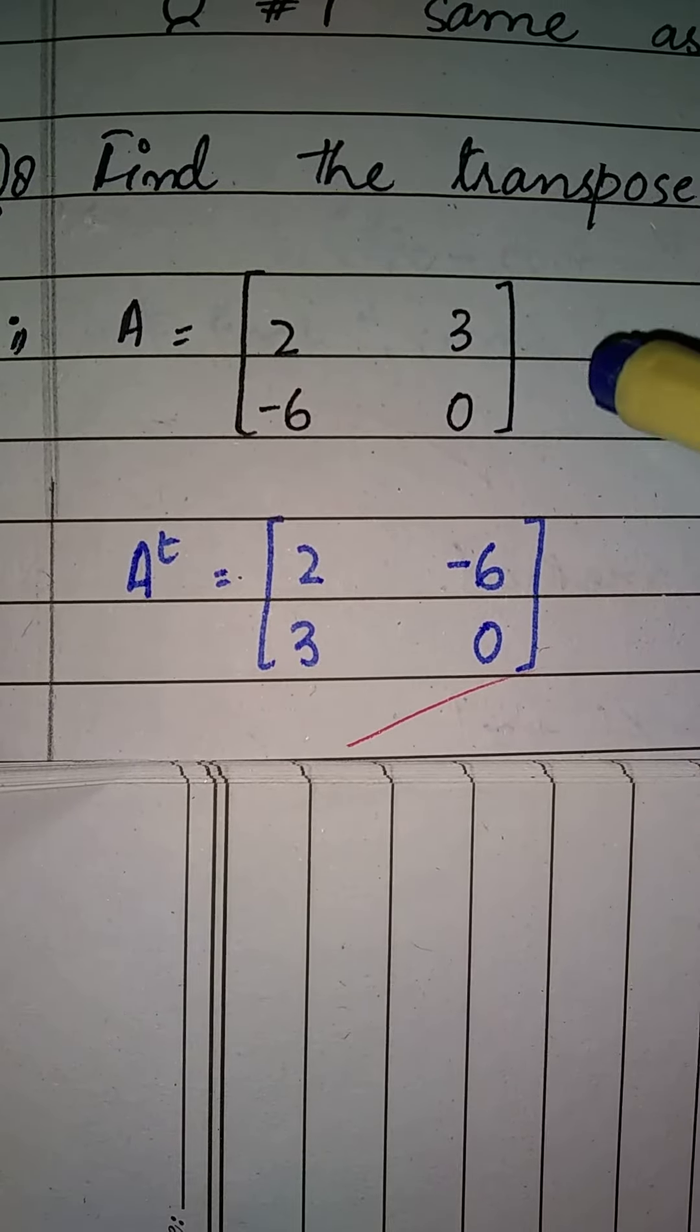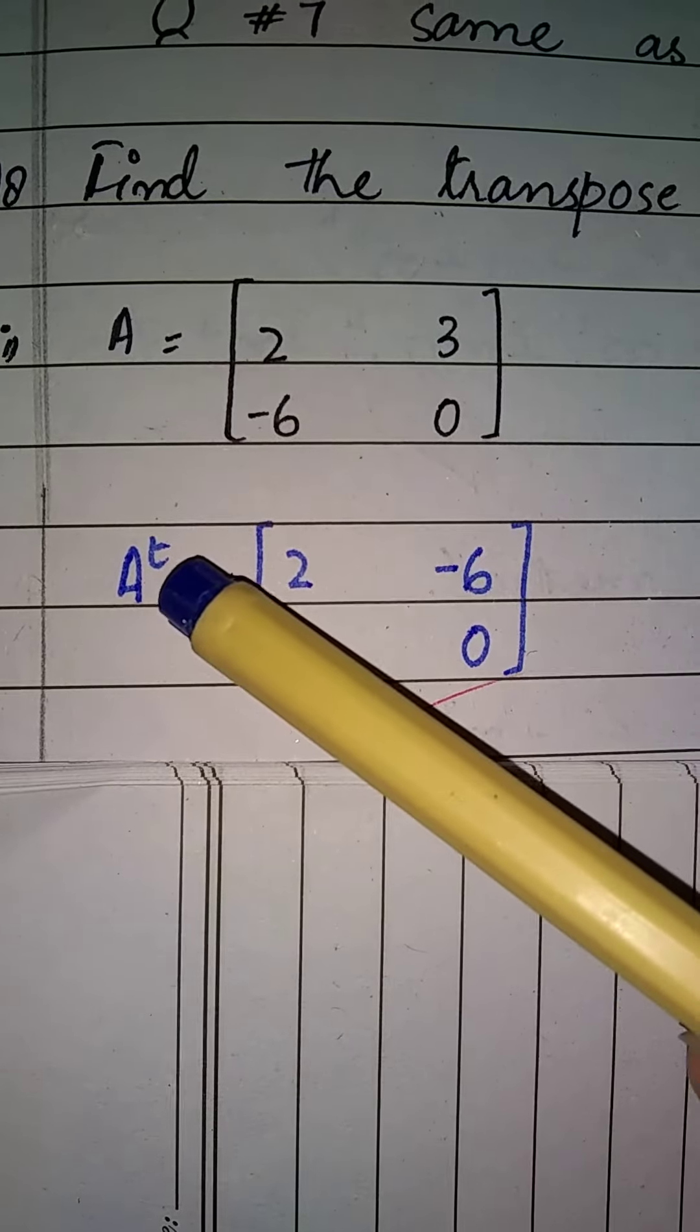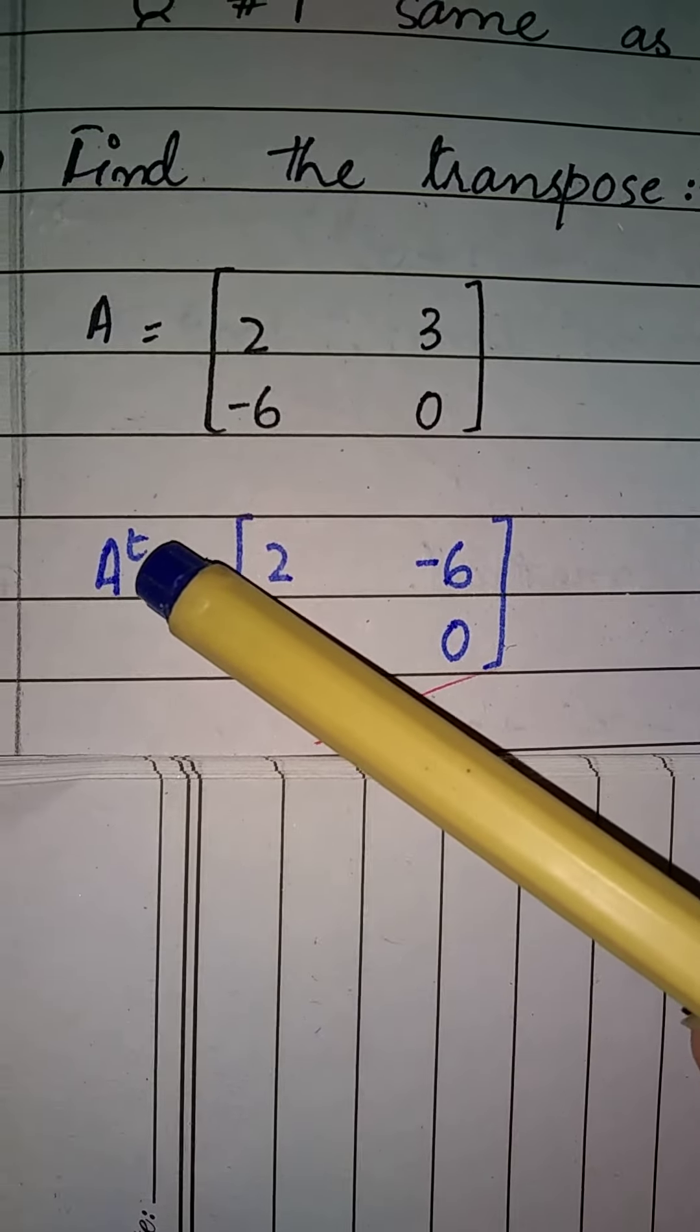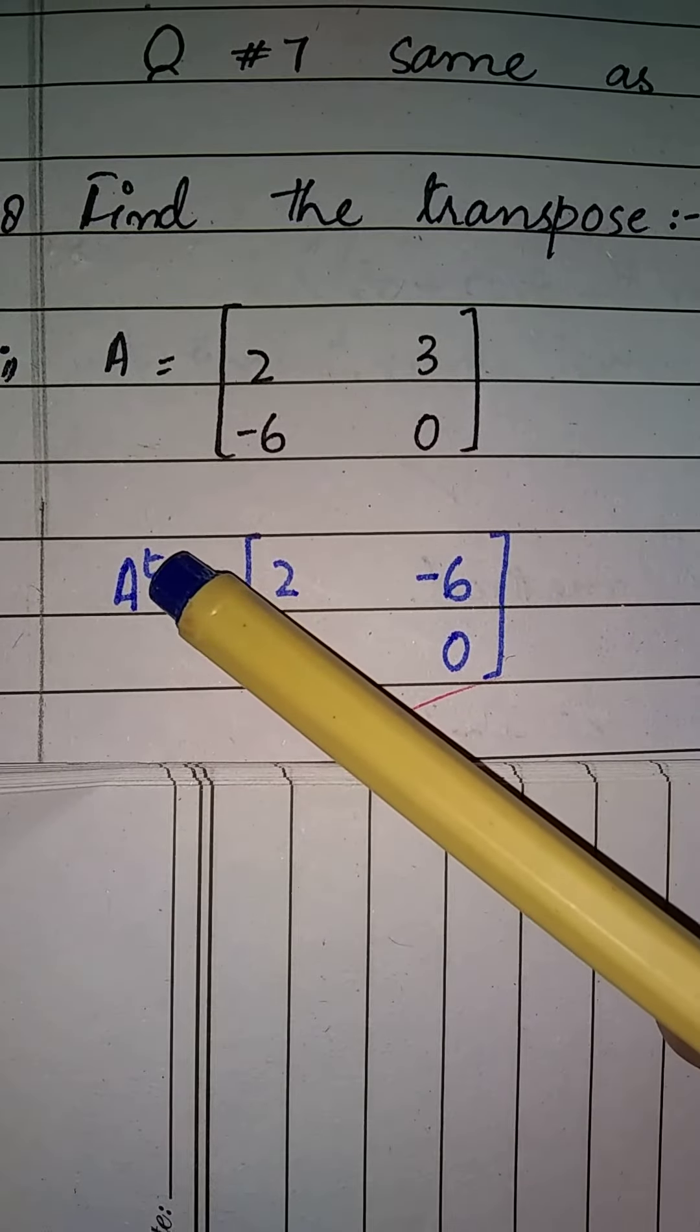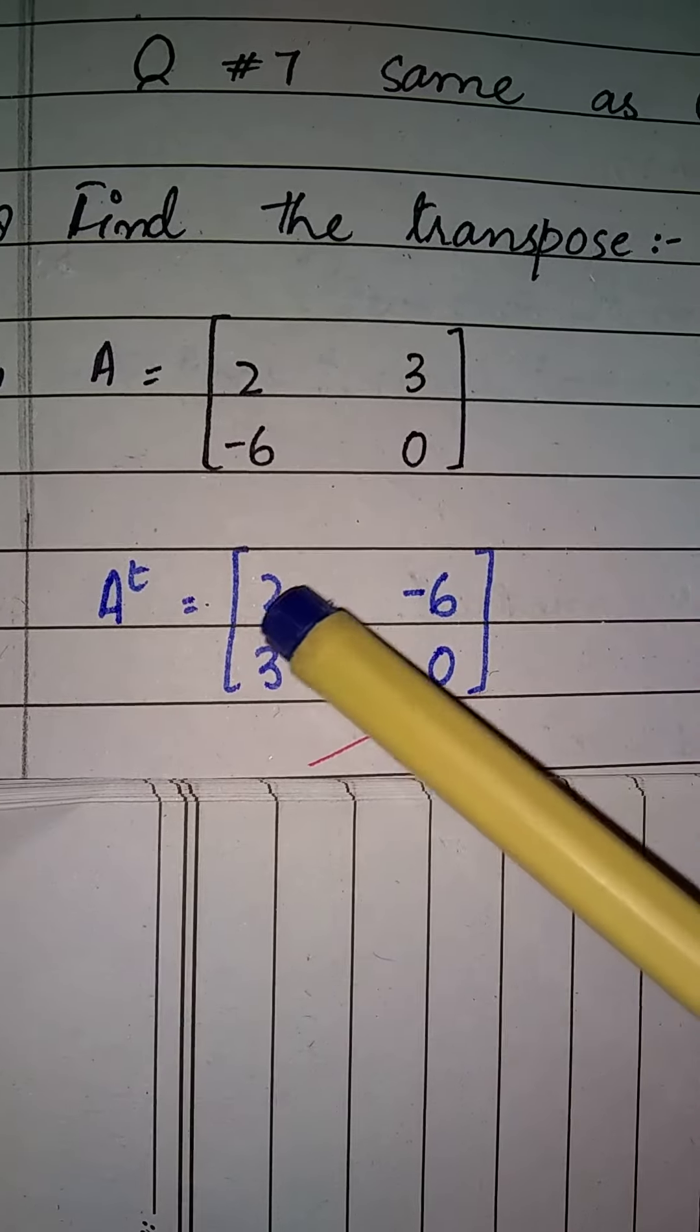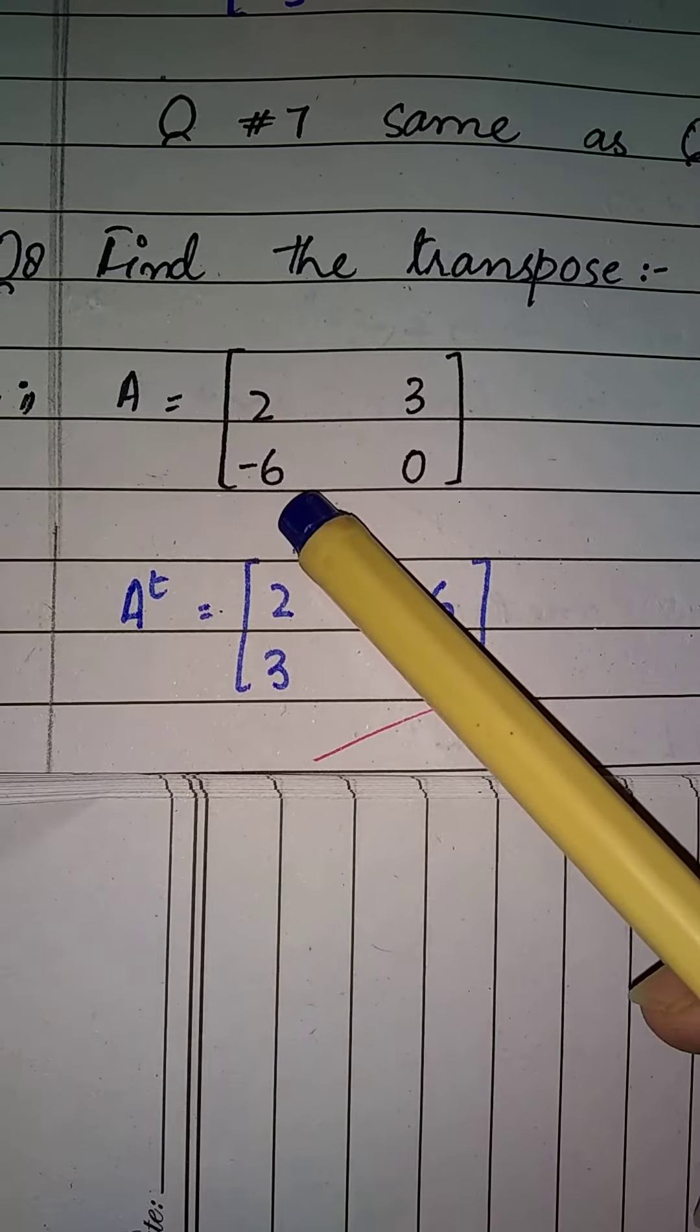Transpose, which one we find? It's very simple. What do we do for transpose? We show the name of the matrix as it is with a small t. This is the transpose. Now, we have to change the rows into columns. You all know that there are rows and columns in the matrix.